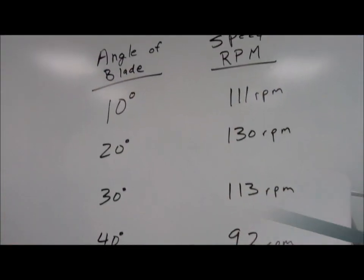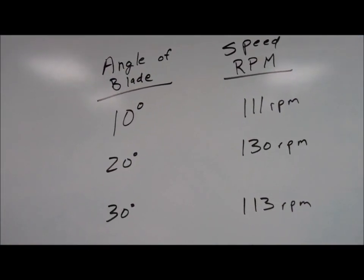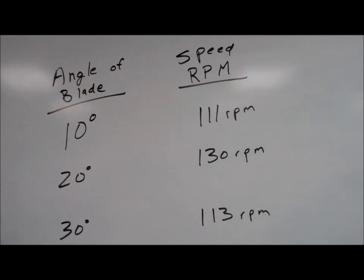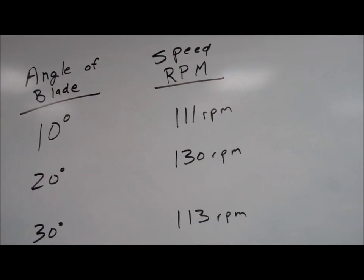Let's take a look at that table of data. So X, our independent variable, is the angle of the blade. Y, our dependent variable, is speed in revolutions per minute.